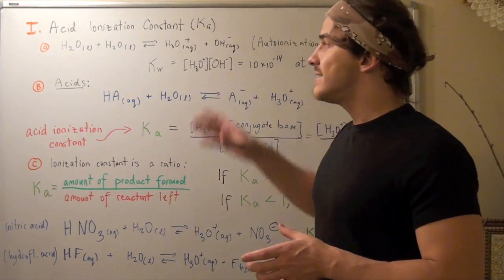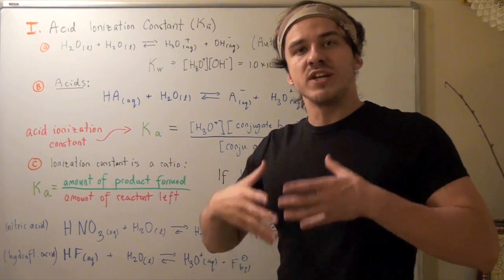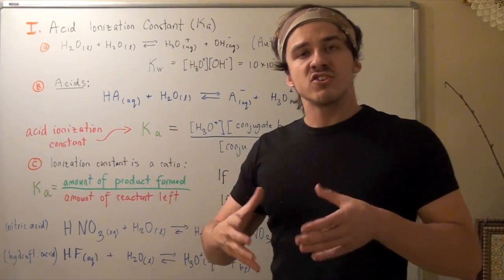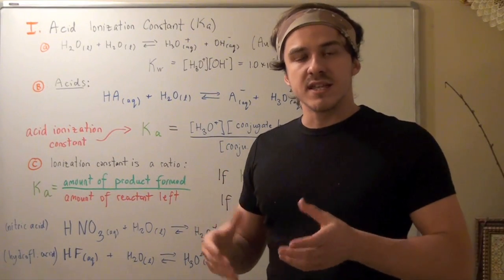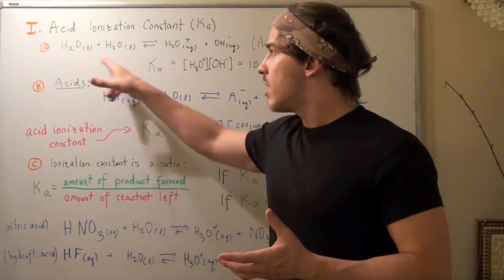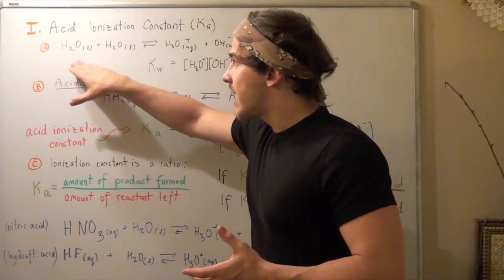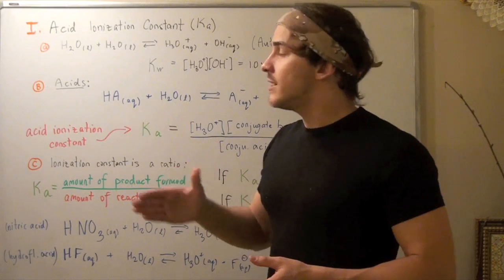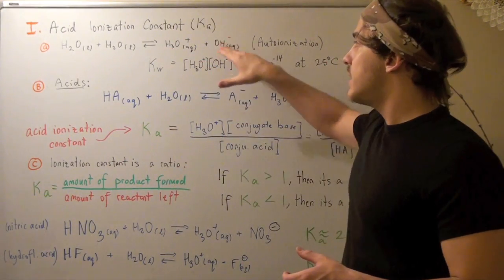But before we talk about Ka's, let's look at the ionization reaction of water. Remember, water molecules can act as both acids and bases. In fact, if you add two water molecules together, one will act as an acid and the second one will act as a base, creating a conjugate acid and a conjugate base.